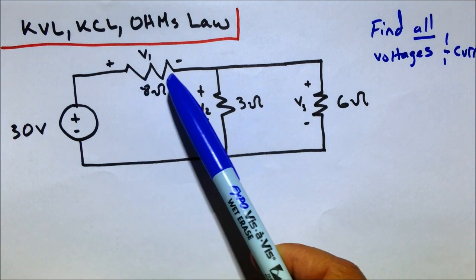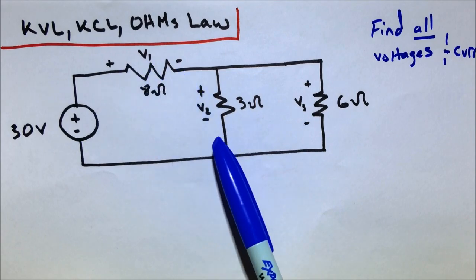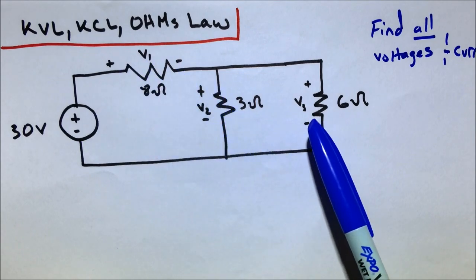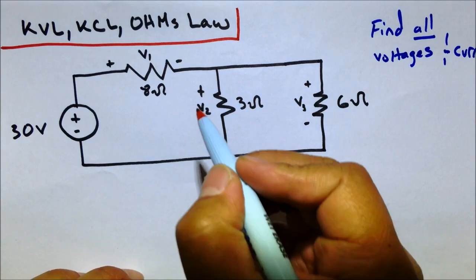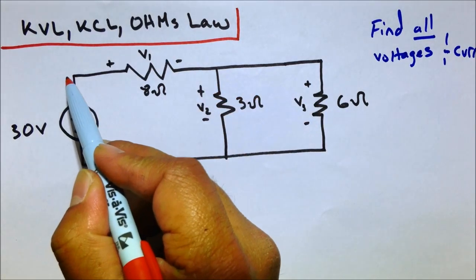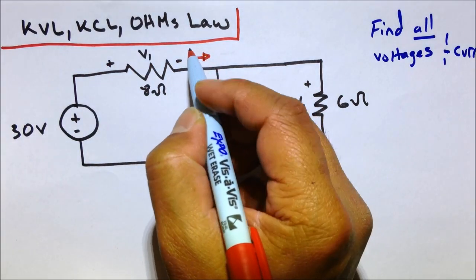And the voltage is already labeled for you. So we need to find V1, which is the voltage across there, V2 the voltage across that resistor, and V3 the voltage across that resistor. But I also want you to find currents. So let's go ahead and identify the currents I want you to find. So we have a current going through here that goes through that resistor. Let's call that I1.